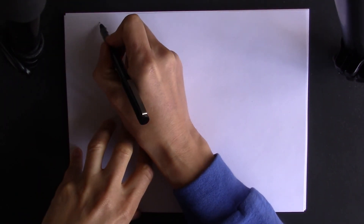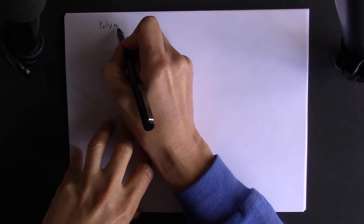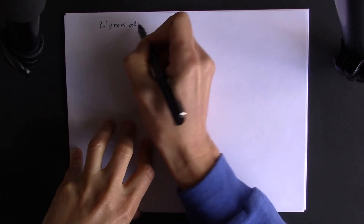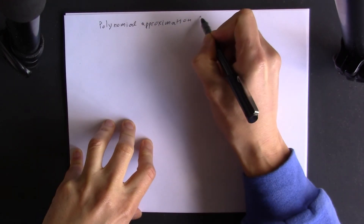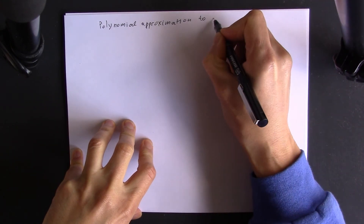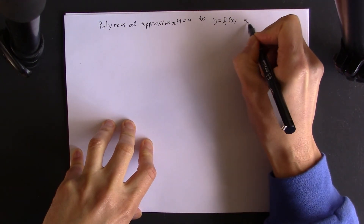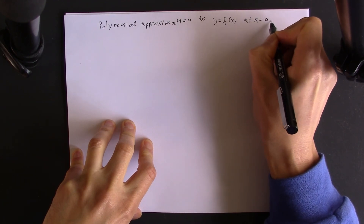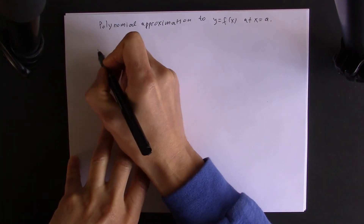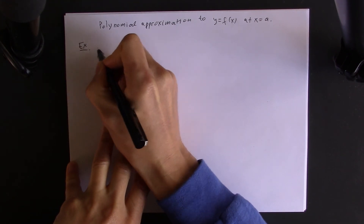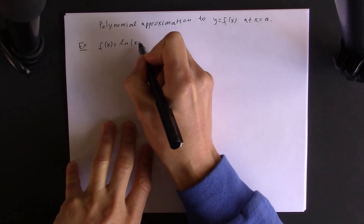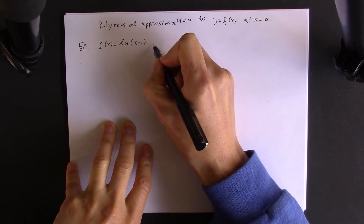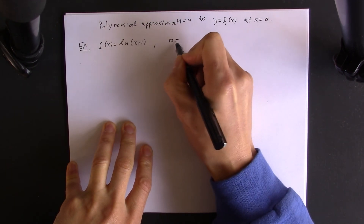We discuss polynomial approximation to a function y equals f of x at x equals a. We start with an example where we work with the function f of x equals the natural log of x plus 1, and we do the approximation at a equals 0.